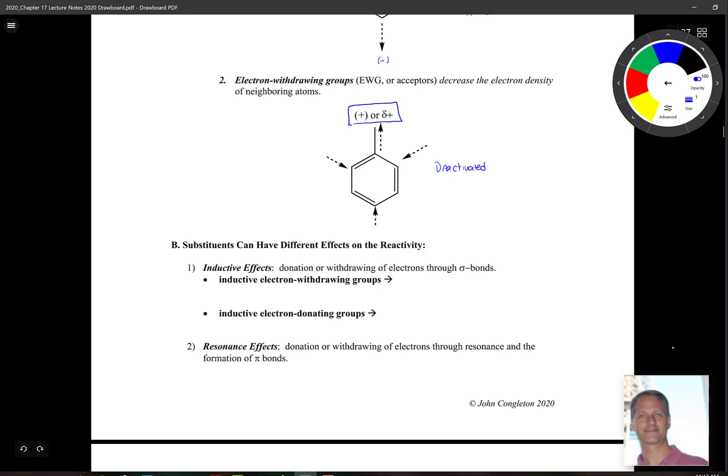And deactivated overall because, remember, the benzene's double bonds are acting as the nucleophile. So if you're pulling electron density away, then you're making the nucleophile weaker. So they're deactivated. And we say that they're meta directing. So we see substituents happening right there. So that's where we're going to see our substitution.